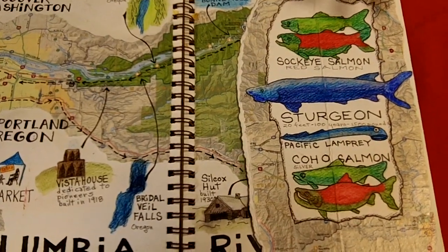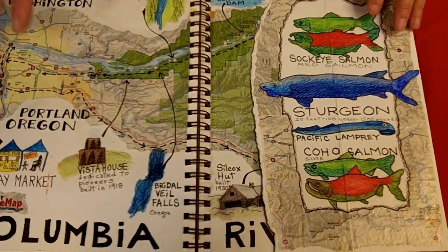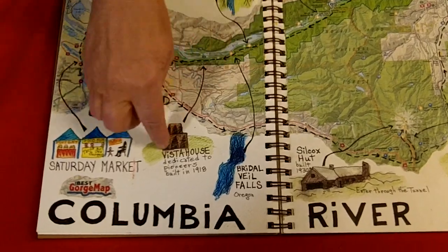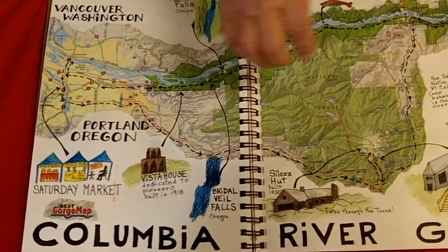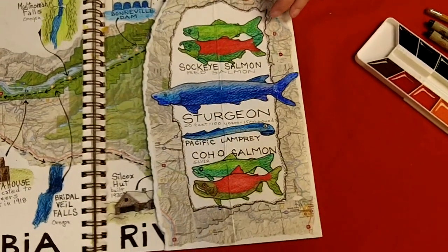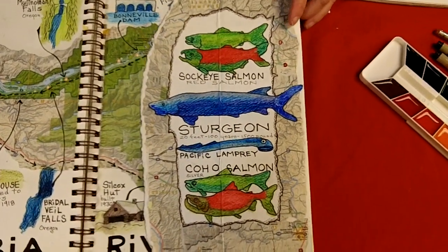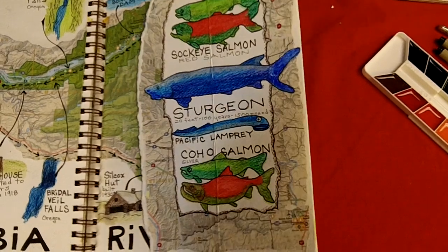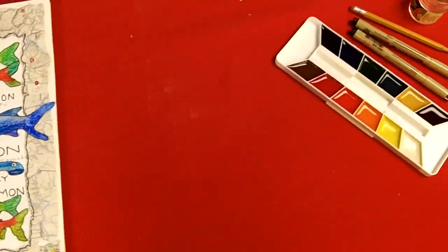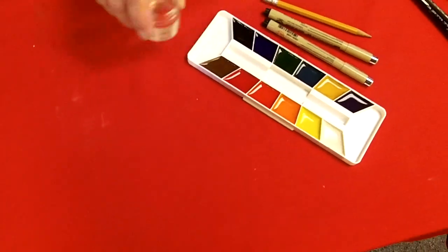And last thing I'm going to show you is this is the Columbia Gorge, which I drove up and down. So I glued a map in here. And then I sketched out different places where I stopped. And of course, some of the fish from the fish hatchery.